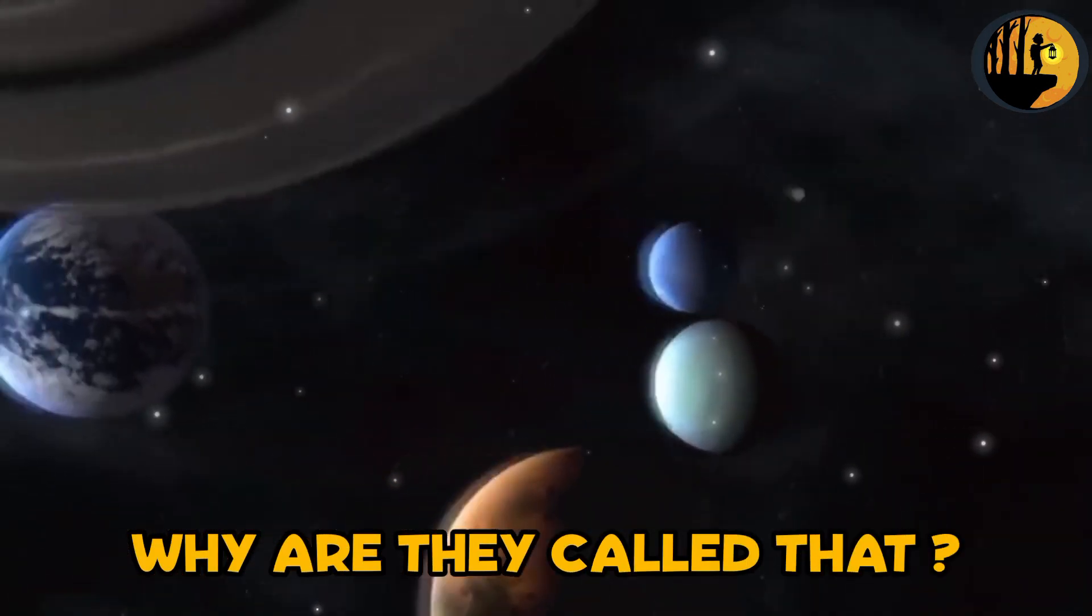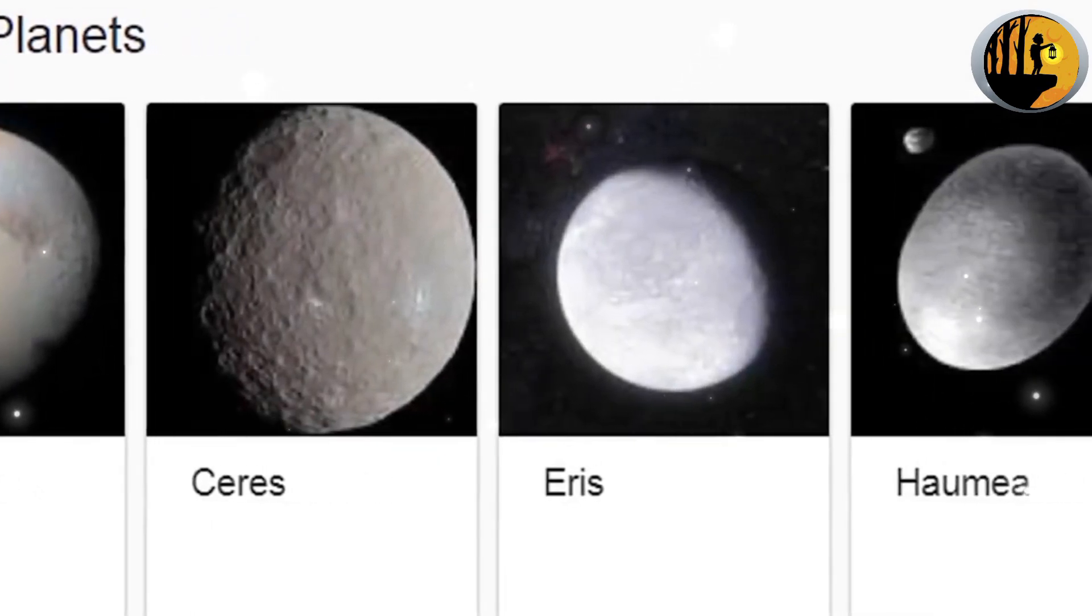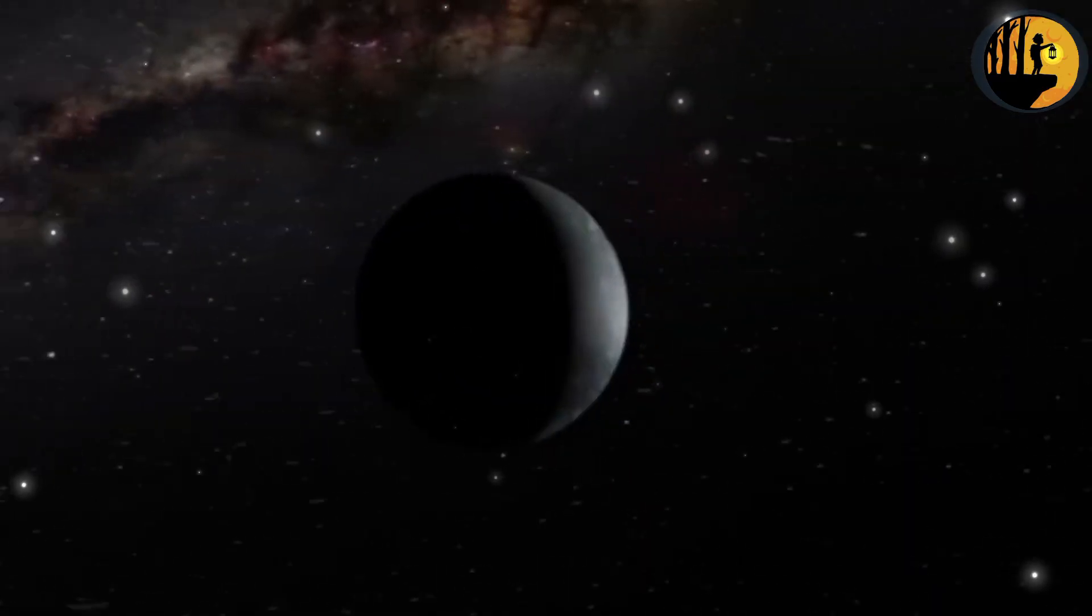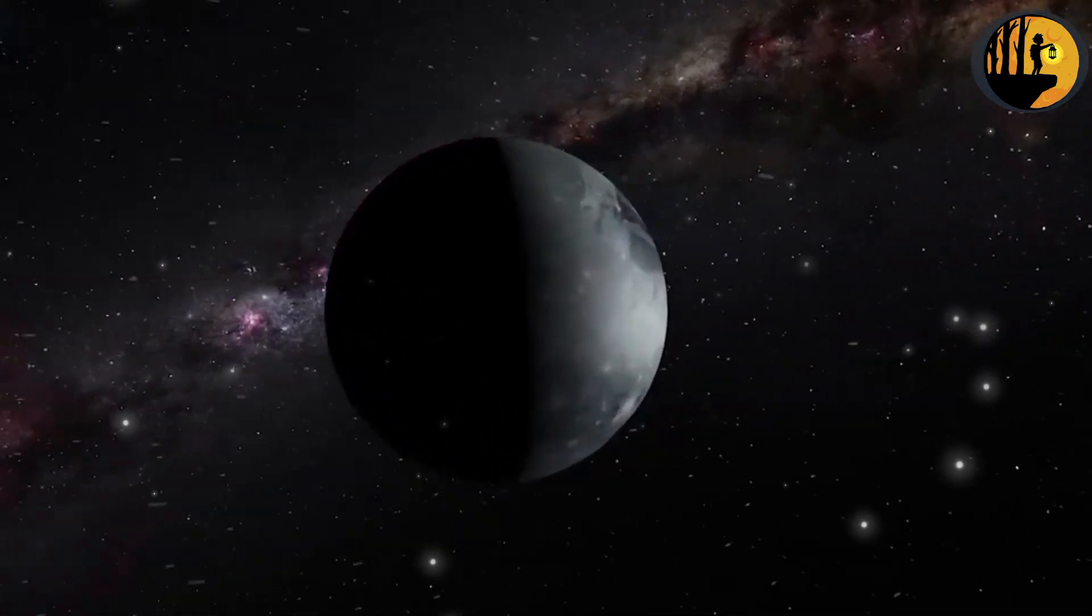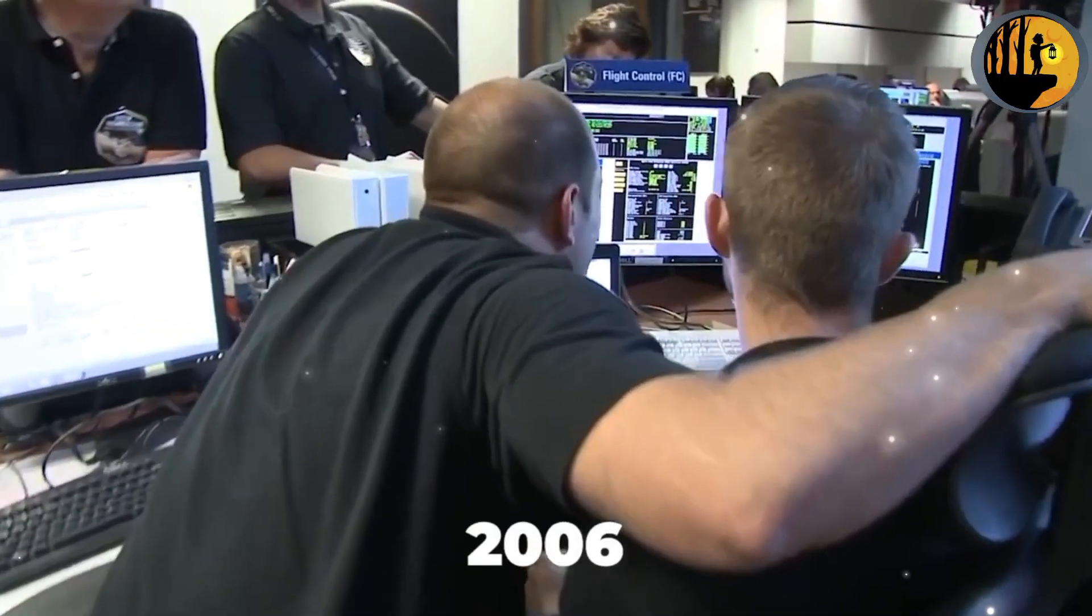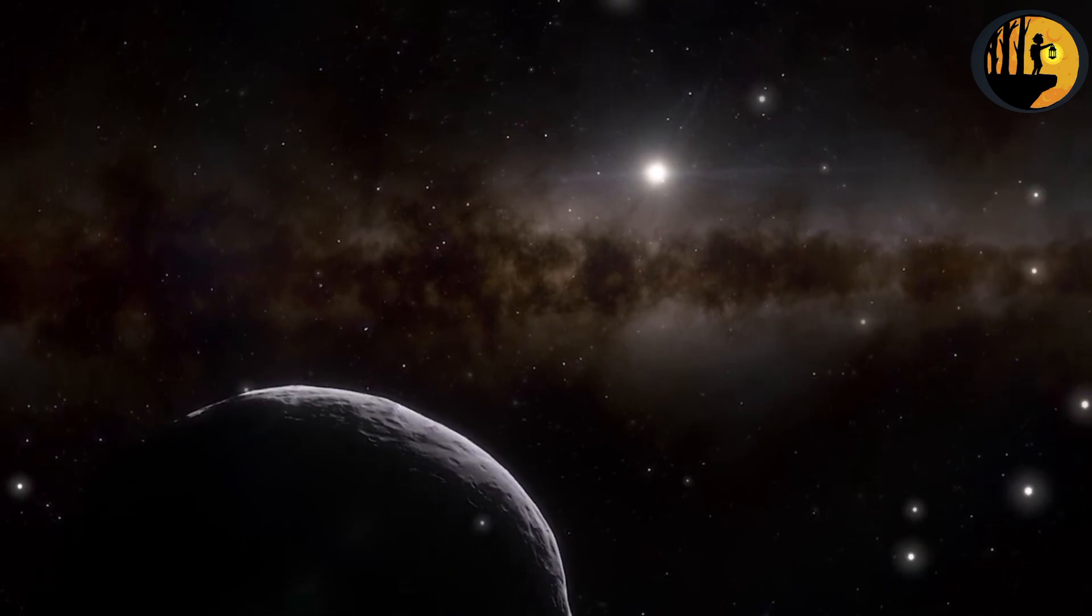Why are they called that? Dwarf planets are called dwarf because they share similarities with planets but do not meet all the criteria to be classified as full-fledged planets. The term dwarf is used to differentiate them from the traditional planets in our solar system. In 2006, the International Astronomical Union, IAU, established a new definition for what qualifies as a planet.